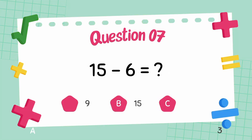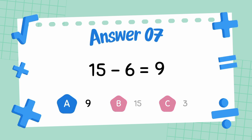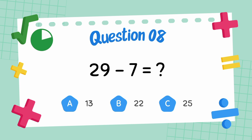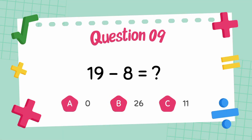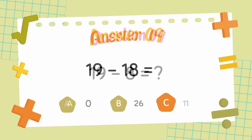What is 15 minus 6? The answer is 9. What is 29 minus 7? The answer is 19. What is 19 minus 8? The answer is 11.